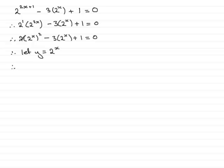So therefore I have 2y squared minus 3y plus 1 equals 0.